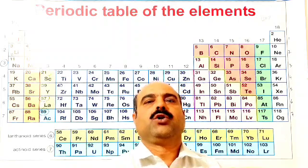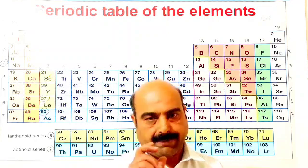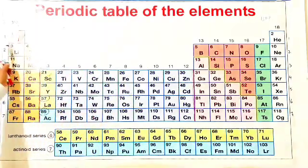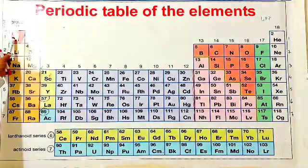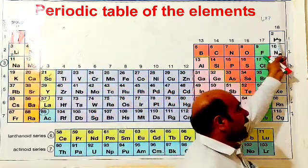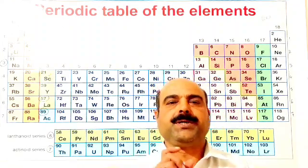There are total 7 periods in the periodic table. And these are period number 1. It has just 2 elements hydrogen and helium. And this period is called the shortest period.